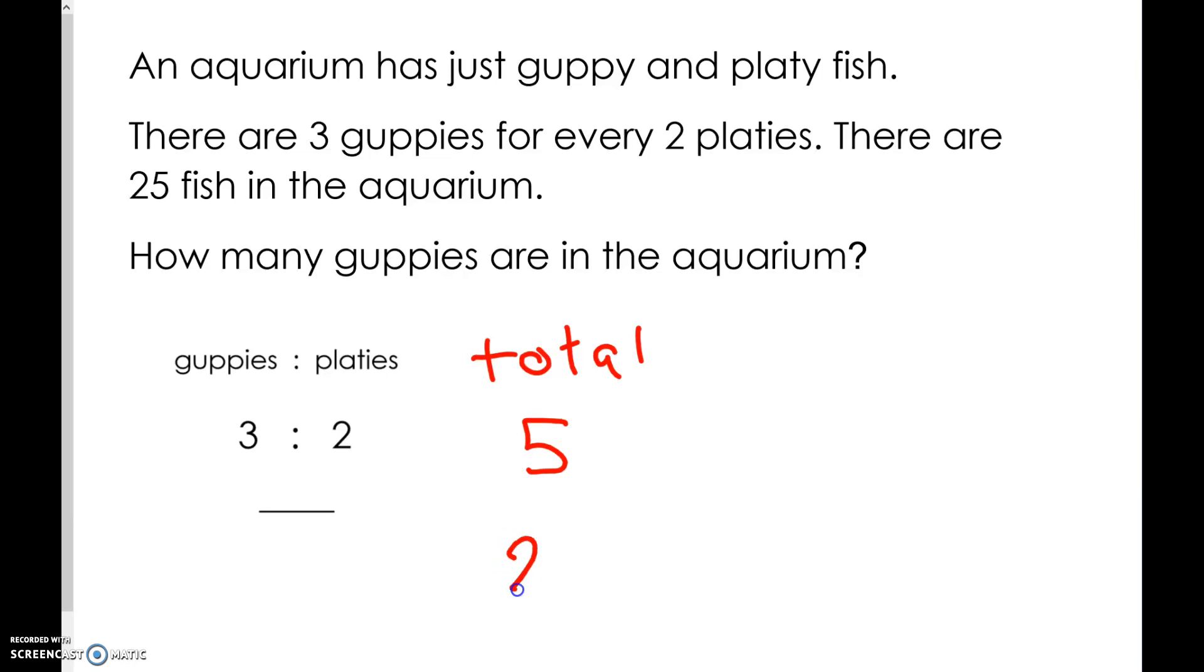If there are 25 fish in total, we know that we have multiplied our total fish by 5. Therefore we can multiply each number in the ratio by 5. 3 times 5 is 15. 2 times 5 is 10. Remember the question is asking how many guppies are in the aquarium. Guppies is the first number in the ratio. There are 15 guppies in the aquarium when there are 25 fish.